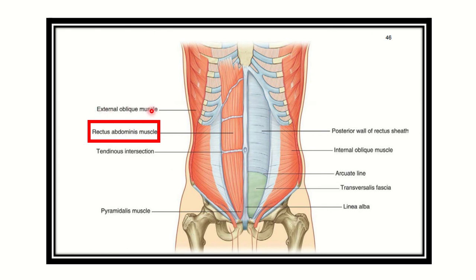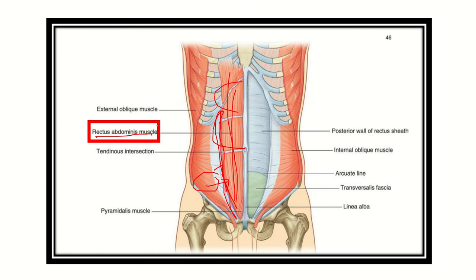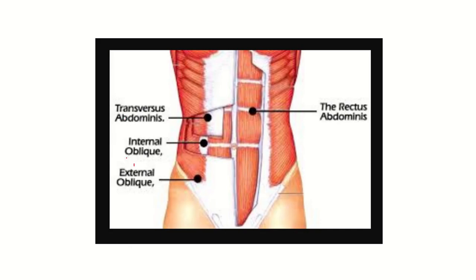For the appendectomy, the external oblique muscle is first removed. Then there is the internal oblique muscle. If we move laterally, we see a tough fibrous structure. Moving medially from that fibrous structure, we encounter another muscle. In this picture, we can see the external oblique muscle, and just below it the internal oblique muscle. Extending medially, we encounter the next muscle, which is the rectus abdominis muscle.